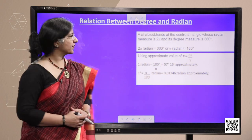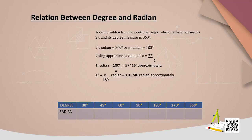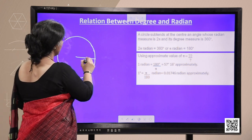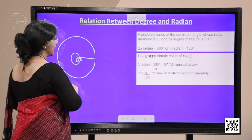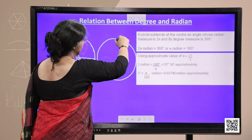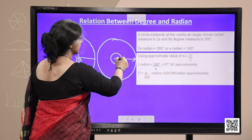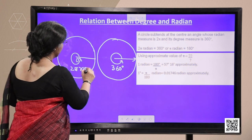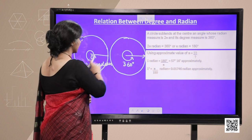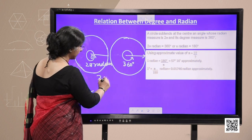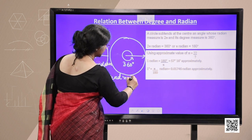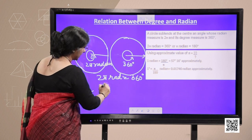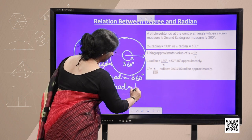For the relation between radian and degree measure: a circle subtends at the centre an angle whose radian measure is 2π. If it is a unit circle, a complete revolution corresponds to angle 2π. Considered in degrees, a complete revolution is 360°. So in both cases, using the unit circle, 2π radian equals 360°. Dividing both sides by 2, we get π radian equal to 180°.